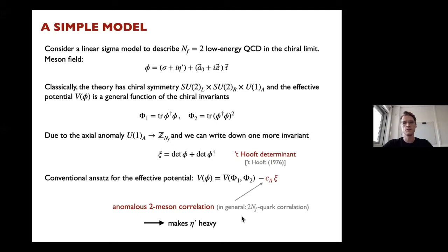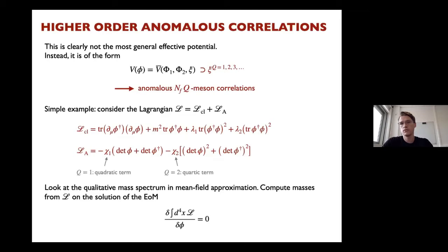For two flavors, this gives a term quadratic in φ, yielding an anomalous two-meson correlation. This is famously what makes the eta prime heavy. This is not the most general effective potential, because anything allowed by symmetries is part of the effective potential — not only the 't Hooft determinant to the first power, but also to powers of three, four, and so on.